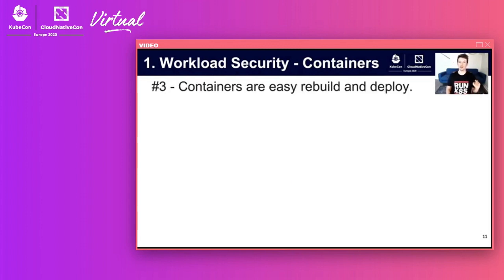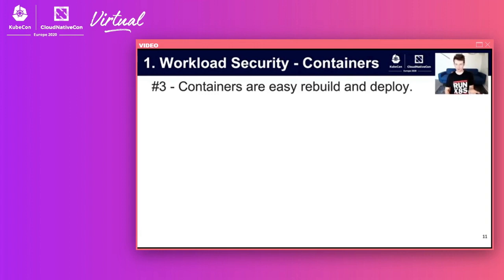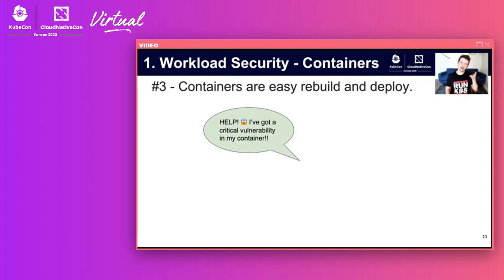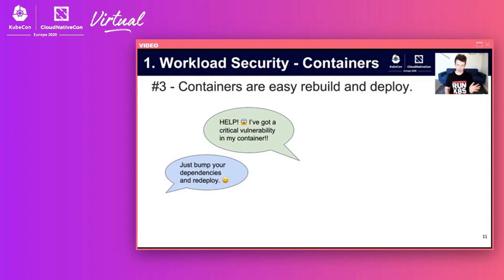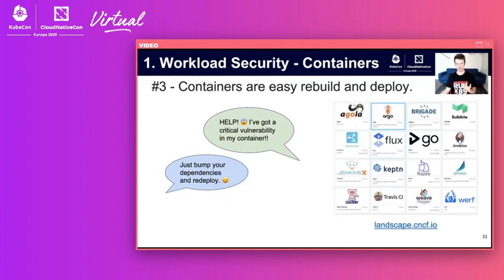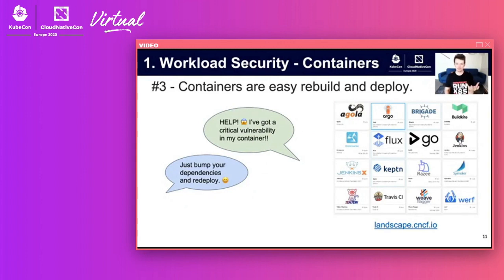Number three: make sure your containers are easy to rebuild and redeploy. A lot of critical vulnerabilities you'll run into are in your dependencies or base images. So when an engineer says 'I've got a critical vulnerability in my container,' if your containers are easy to rebuild and deploy, you just bump the dependency number, bump the base image, edit the Dockerfile — one line change — and let the CI/CD platform take the reins. Setting up a CI/CD platform makes the whole process easier.